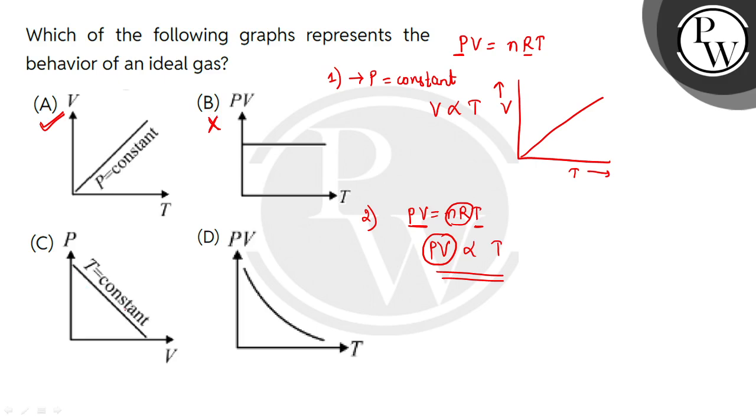From PV equals nRT, if my temperature is constant, then PV will be constant, or P would be directly proportional to 1 by V. We can call it inversely proportional to V. So the graph of P versus V will not be a straight line, but will be a hyperbola.